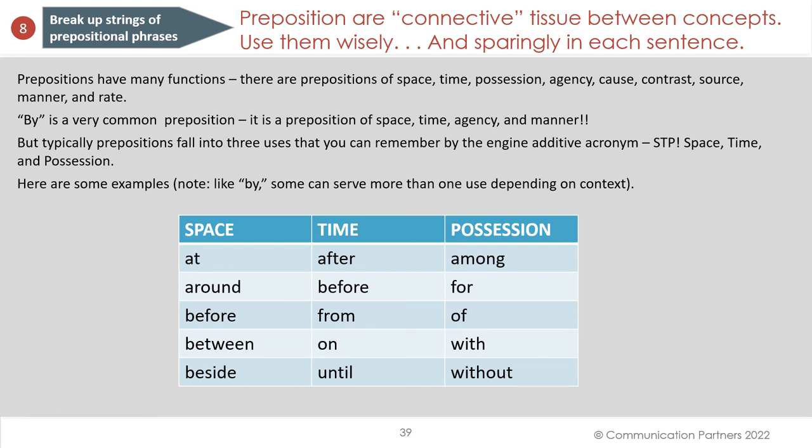Final principle, number eight: break up strings of prepositional phrases. Prepositions serve a very important function — they're connective tissue between concepts — but you need to use them wisely and sparingly in each sentence. Prepositions have many functions: space, time, possession, agency, cause, contrast, source, manner, and rate. A useful acronym is STP: space, time, and possession. Space: at, around, before, between, beside. Time: after, before, from, on, until. Possession: among, for, of, with, without. They're very important, but you don't want to pile them up in a single sentence — avoid strings of phrases beginning with prepositions like of, to, in, for, under, over, around.